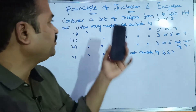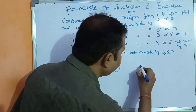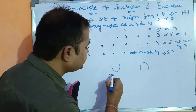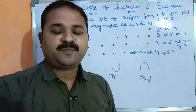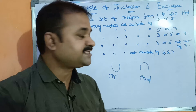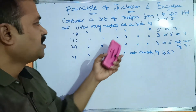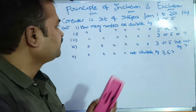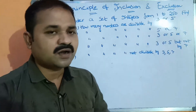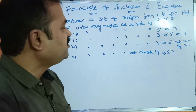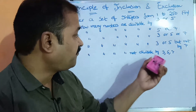In this video we are going to discuss the Principle of Inclusion and Exclusion. Inclusion means union operation, whereas exclusion means intersection operation. We know that union means OR operation, whereas intersection means AND operation. We will discuss this by solving an example. Consider a set of integers from 1 to 250. Find how many numbers are divisible by: (1) 3 or 5, (2) 5 or 7, (3) 3 or 5 or 7, (4) 3 or 5 but not by 7, and (5) not divisible by 3 or 5 or 7.